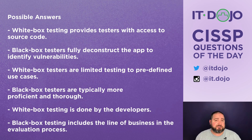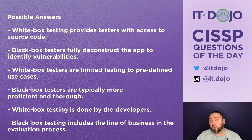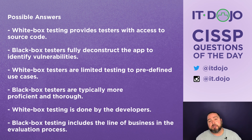A black box tester is a person responsible for testing the functionality of the software and doing quality assurance — does the software work? White box testers, on the other hand, typically have programming skill and programming knowledge. They also have access to the source code and can go in and look at the internal details of how the software is working.